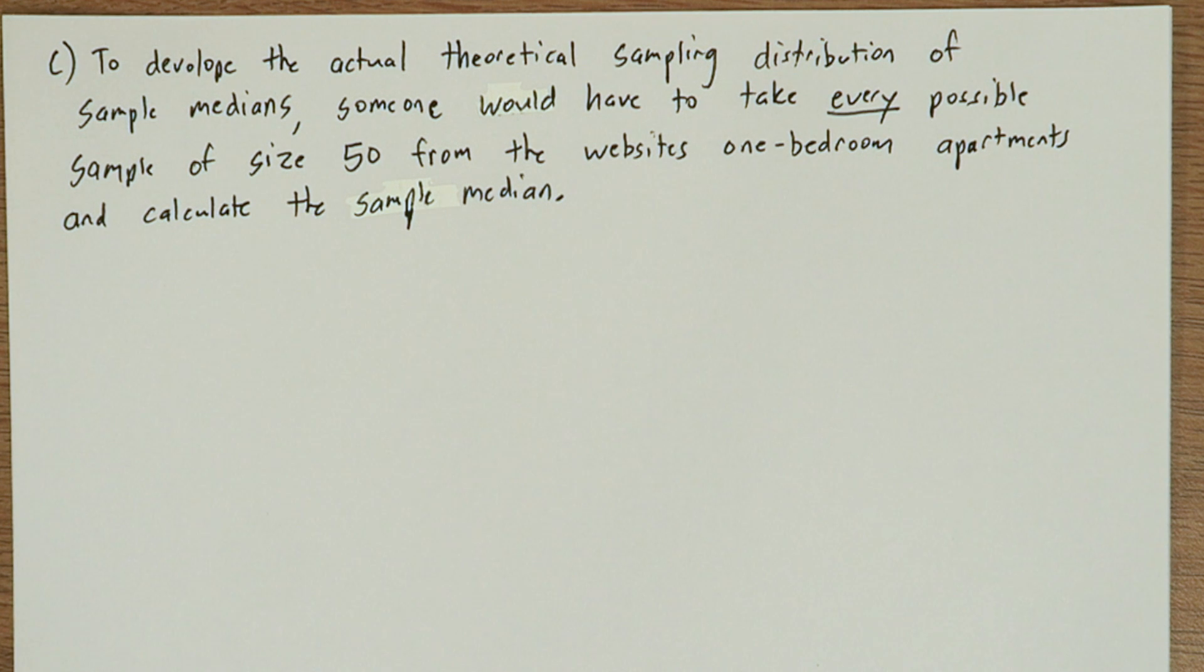Imagine there's only 200 one-bedroom apartment listings on this website. You would have to look at listings one through 50, calculate the median, then say one to 49 and listing 51, calculate the sample median. That's a different one. And then every little tweak you take, every unique possible sample of 50 listings is going to lead to another median calculation. And once you do every possible combination of 50 listings and calculate all those medians, that's going to be your sampling distribution for sample median.